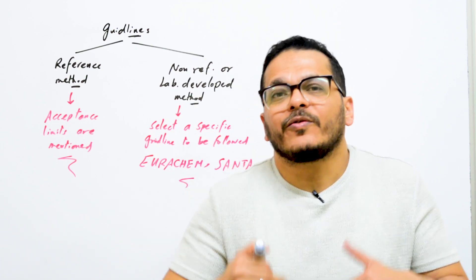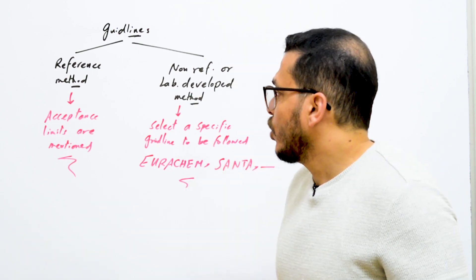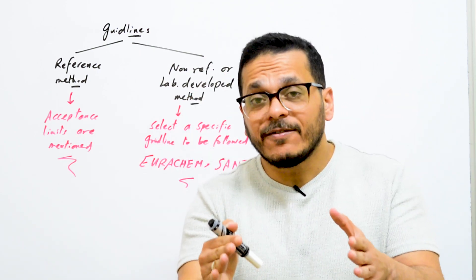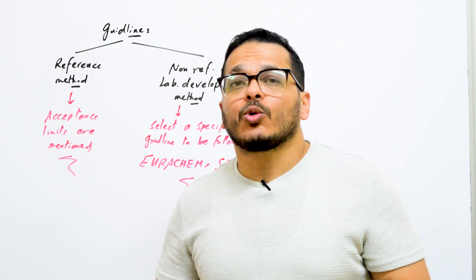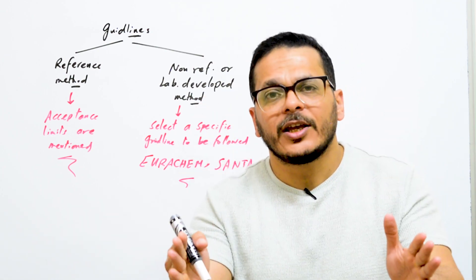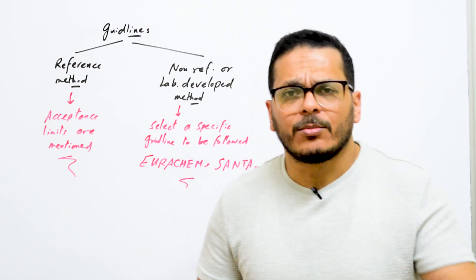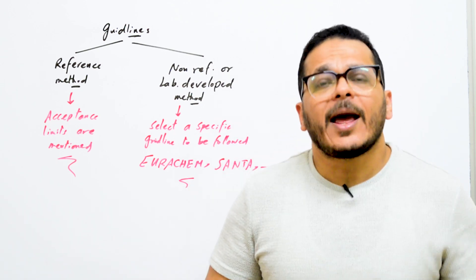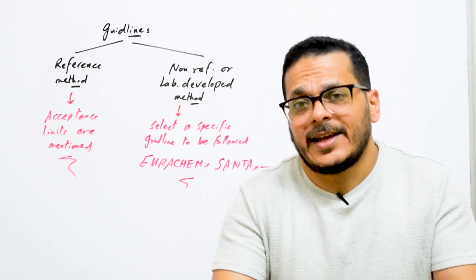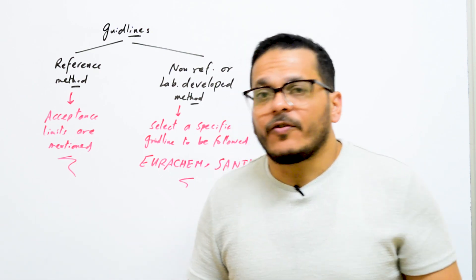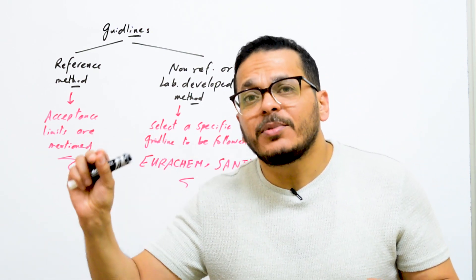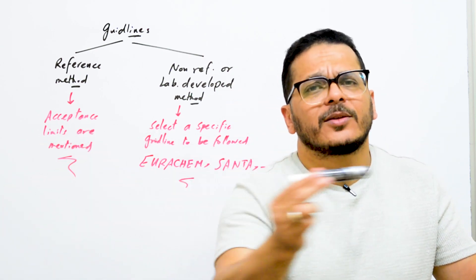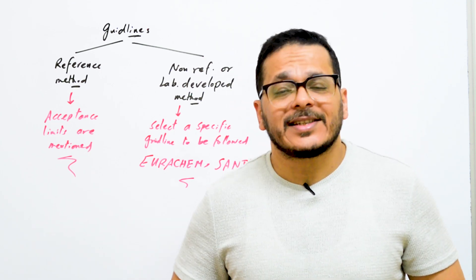Inside the reference method, you will find the method steps and also some method performance parameters to evaluate or verify the method inside your lab, as well as acceptance limits and quality control procedures that you should follow with every run. Everything will be provided within this method, such as standard methods for water analysis or any other reference methods. For non-reference or lab-developed methods, these are methods developed inside the lab — you search publications to find out what analysts did before to analyze these target analytes in the same matrix.